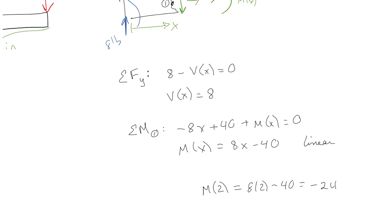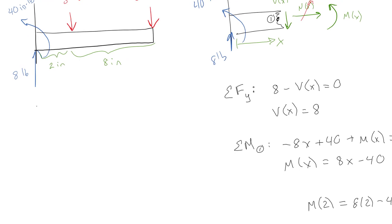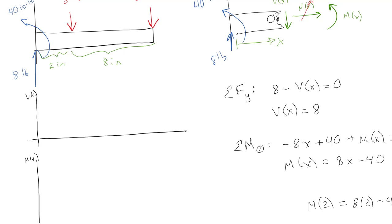Let's draw that in. I like to draw my shear and moment diagrams so they line up one right after the other. So this is my shear and this will be my moment. I know that all my shears are going to be positive and all my moments are going to be negative. My shear here is 8, extending from 0 to 2. I'm marking 2 and 10 on the axis.